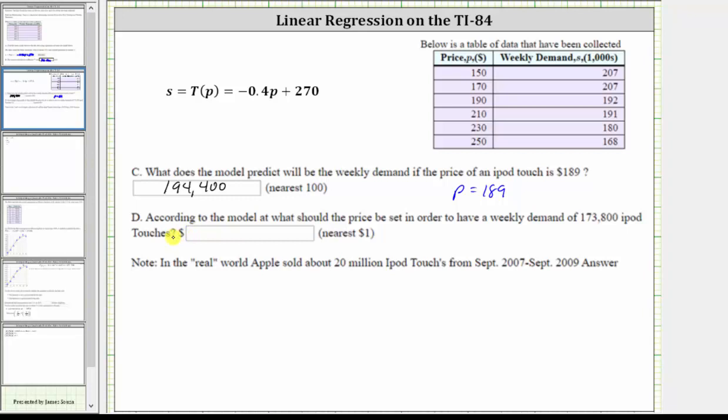And then part D, according to the model, what should the price be in order to have a weekly demand of 173,800 iPods? Remember the function value T of P is in thousands, and therefore they're telling us T of P is equal to 173.8.